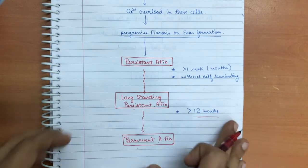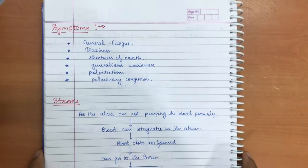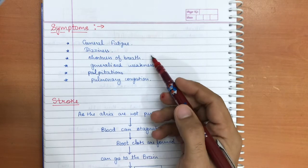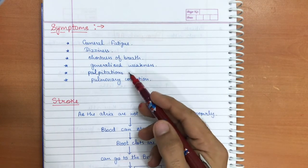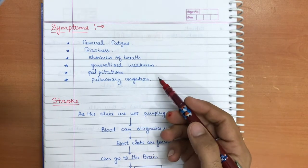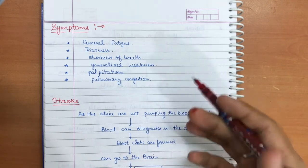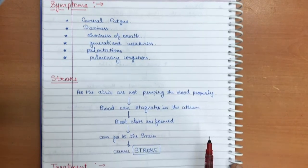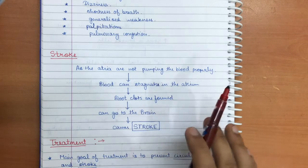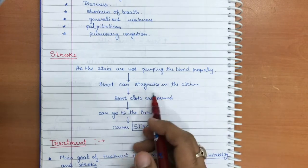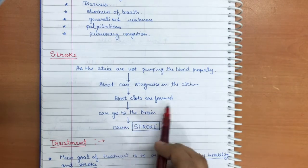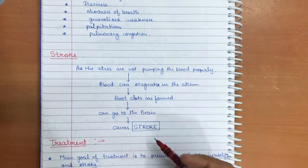The symptoms of atrial fibrillation include general fatigue, dizziness, shortness of breath, generalized weakness, palpitations, and pulmonary congestion. One of the most severe complications is stroke: since the atria are not pumping blood properly, blood stagnates in the atrium, clots can form, and these clots can travel to the brain causing stroke.